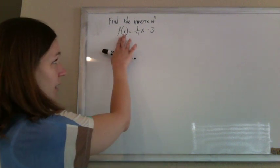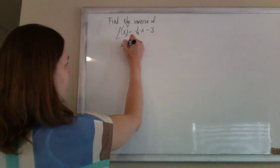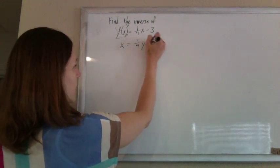So f of x is like y, so this is like y equals one fourth x minus 3. We're going to switch it to x equals one fourth y minus 3.